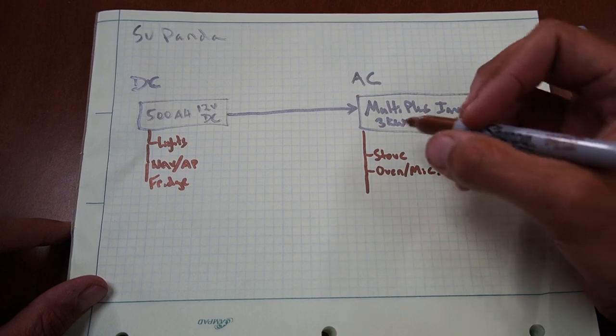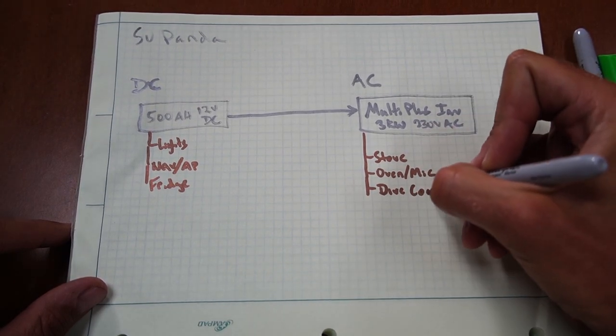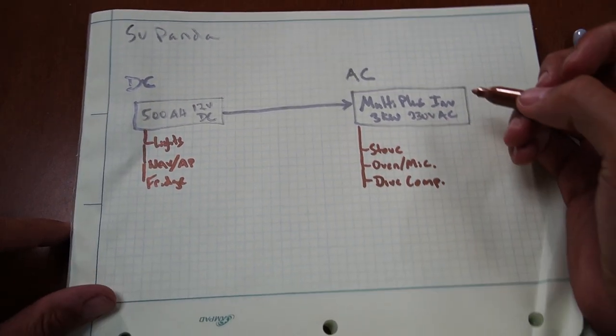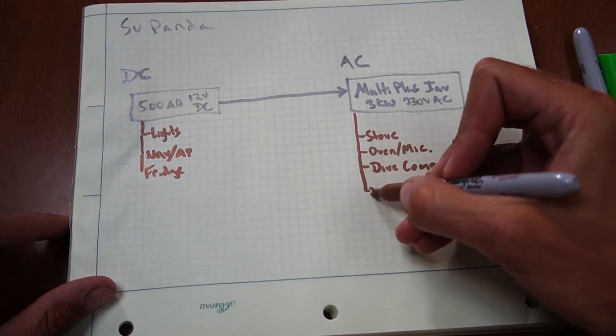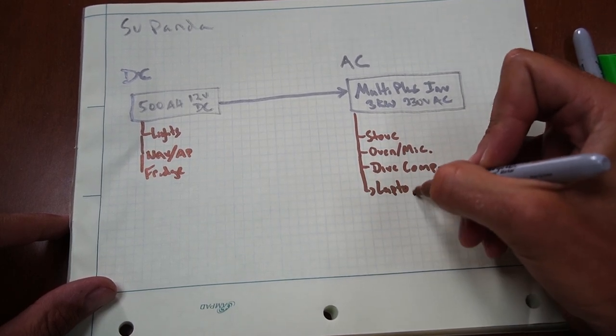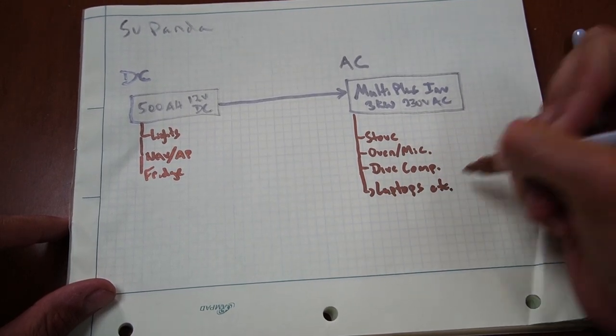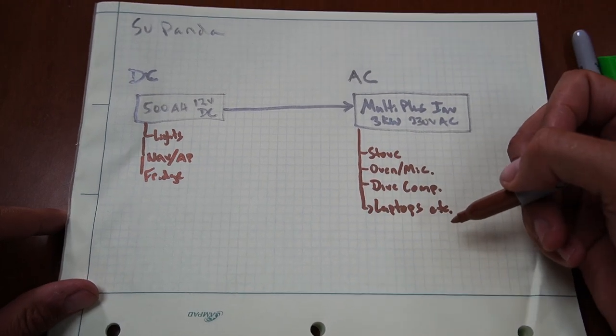We also have our dive compressor. And then we'll have smaller draws, things like laptops and smaller appliances. But that's not too much in our total.